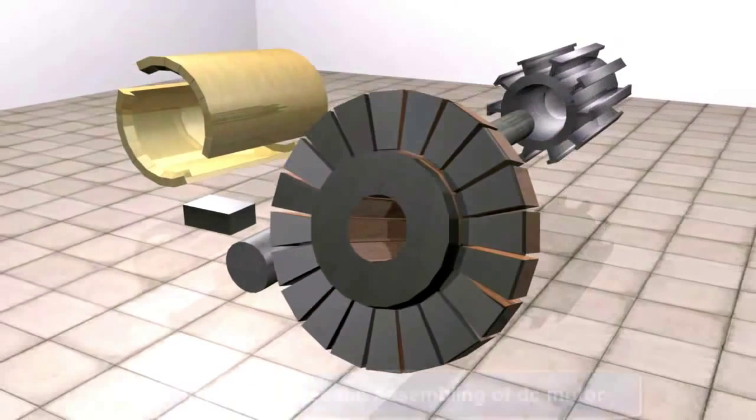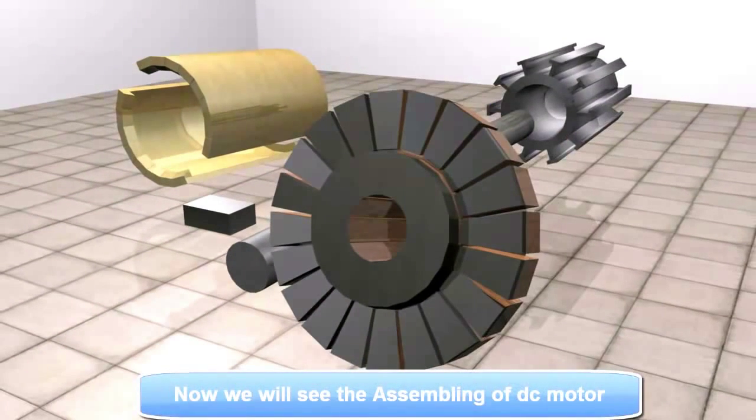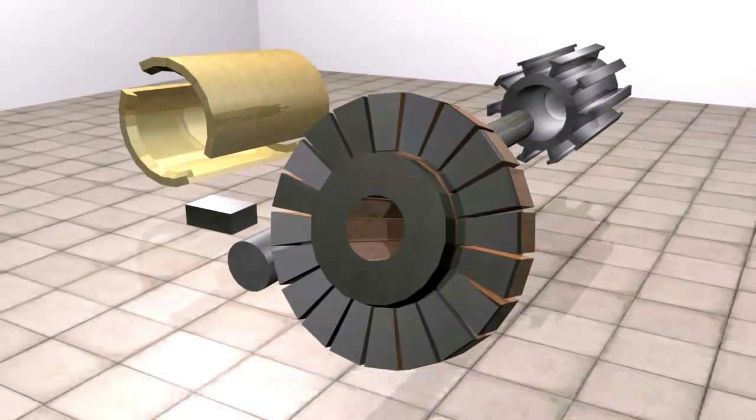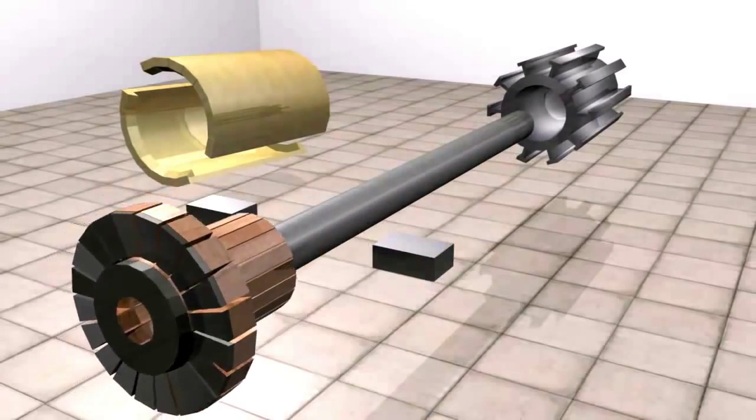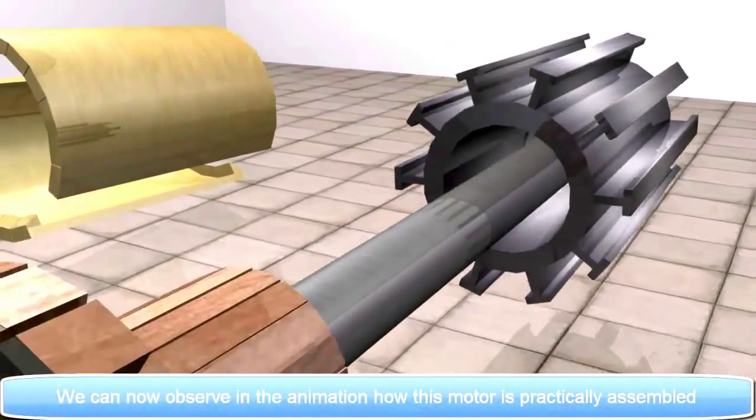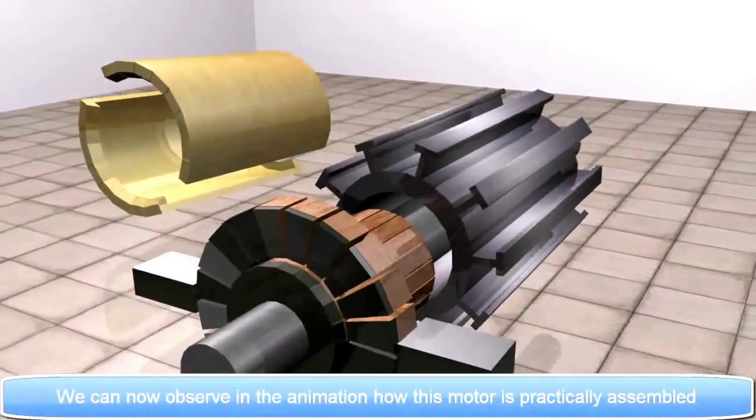Now we will see the assembling of DC motor. We can now observe in the animation how this motor is practically assembled.